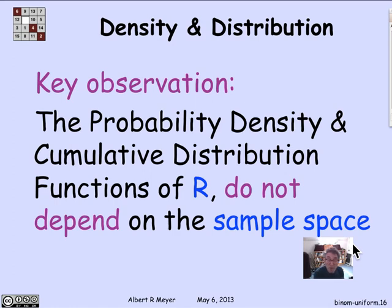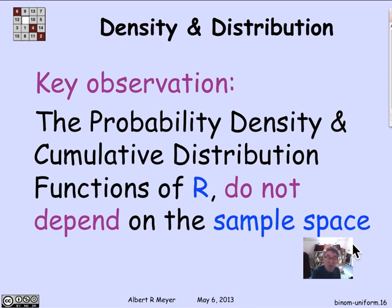This abstraction is valuable because both uniform and binomial distributions come up in many contexts. All these different random variables based on different sample spaces share a whole lot of properties — everything derived from the PDF applies to all of them. That's why abstracting a random variable in terms of a probability density function is so valuable. But remember: the definition of a random variable is not that it is a probability density function; rather, it's a function from the sample space to values.